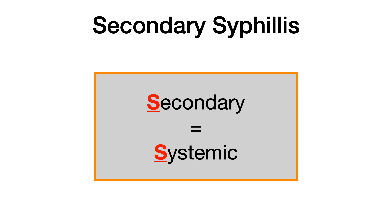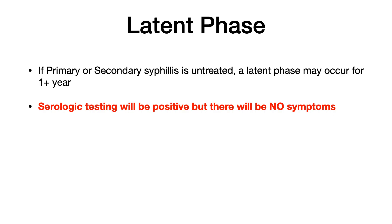If primary or secondary syphilis remains untreated, the patient moves into a latent phase. This can last up to a year or more, during which serologic testing will be positive but the patient will likely be asymptomatic. There are no symptoms, but they are positive for syphilis — hence "latent." This is the result of untreated primary or secondary syphilis.